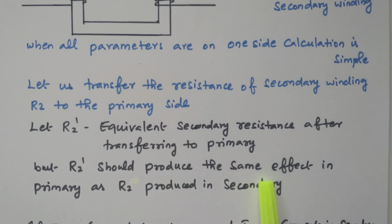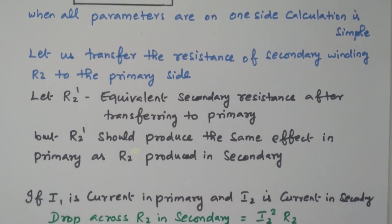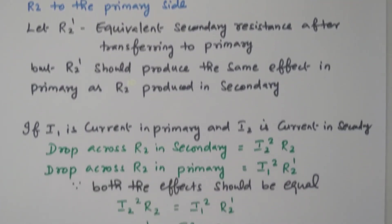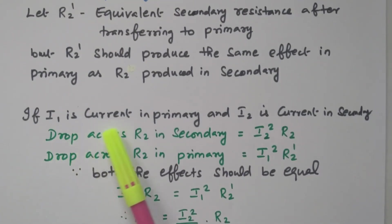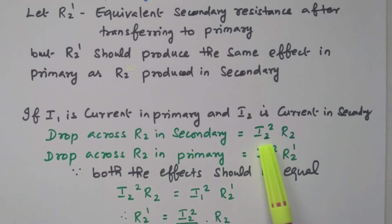R2 dash should produce the same effect in the primary as R2 produced in the secondary. While transferring the resistance from secondary to primary, it must have the same effect — the effect should not change. The same effect available in the secondary by R2 should be produced in the primary by R2 dash. That is our aim. For that we need to find the equivalent resistance equation. If I1 is the current in the primary and I2 is the current in the secondary.